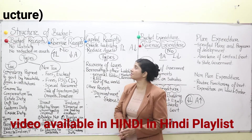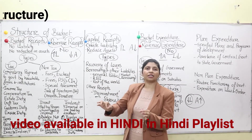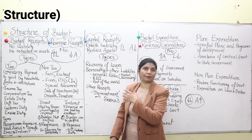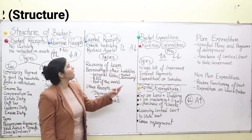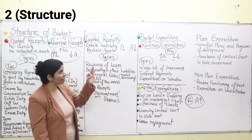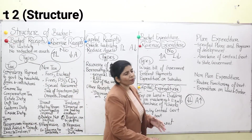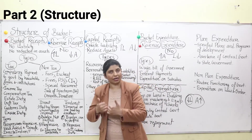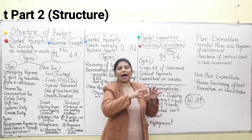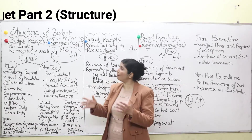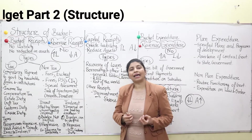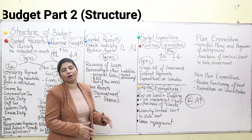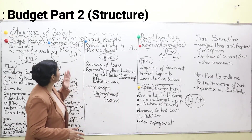Our topic for today is Budget Part 2 — that is, the structure of the budget. Today we will discuss budget receipts and budget expenditure. Budget receipts are of two types: revenue receipts and capital receipts. Budget expenditure is also of two types: revenue expenditure and capital expenditure. Just as we earn income and spend it, the government too gets revenue from certain sources and undertakes expenditure on administration, law and order, and welfare of the general public. We will be discussing this right now.